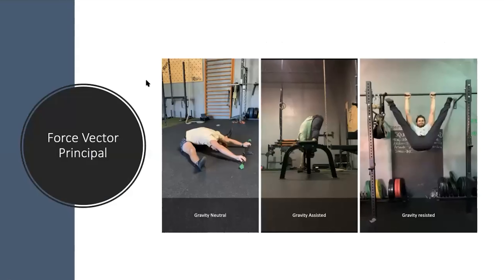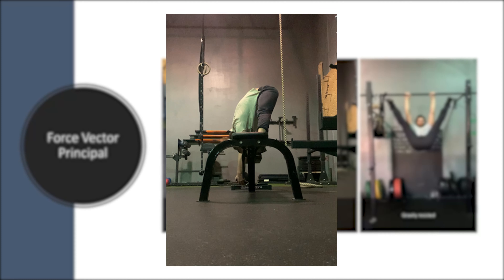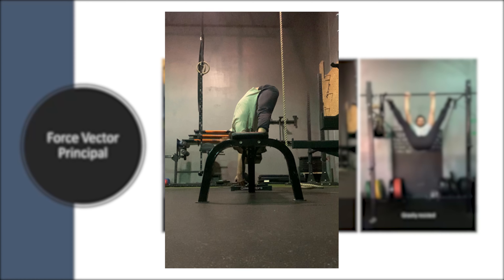Here's the force vector principle. If we take a position — say pancake — and flip it 90 degrees, we'll see gravity plays a different role on our ability to pull ourselves into a stretch. Looking at this gravity-assisted position, we have gravity coming straight down, allowing us to traction the stretch a little bit differently.